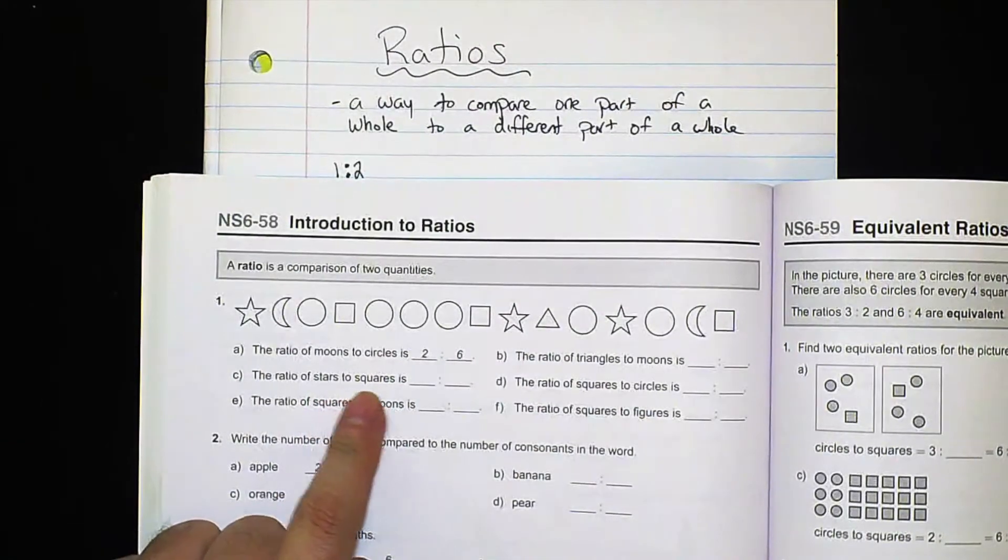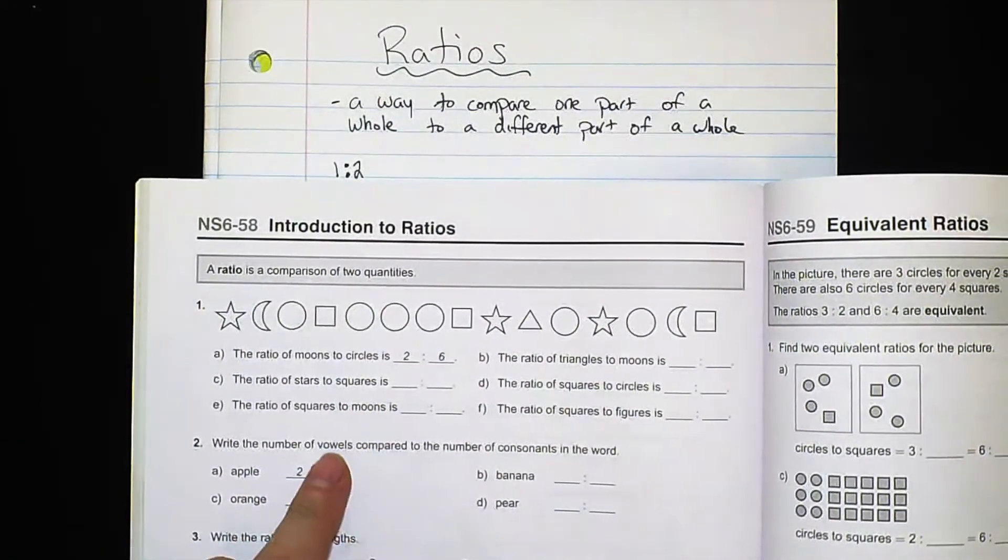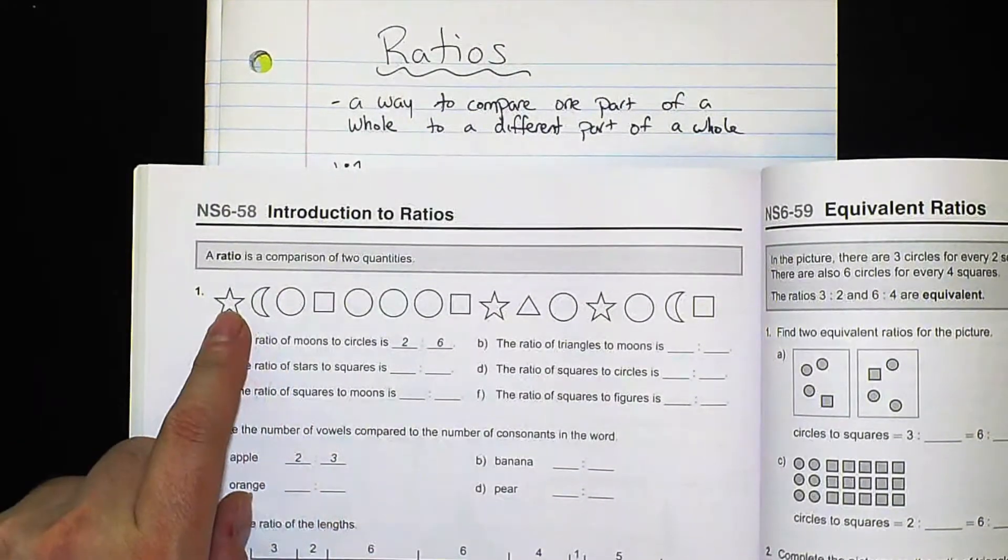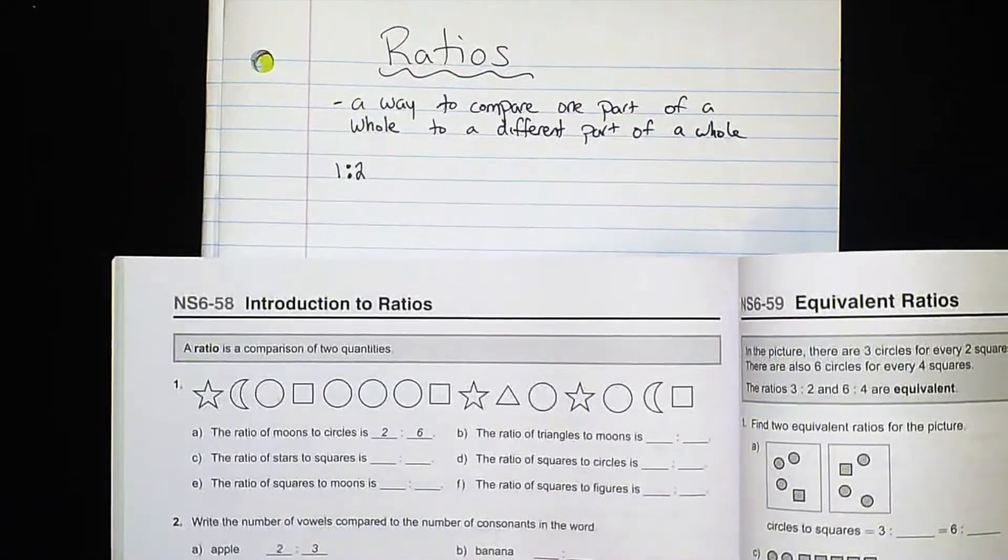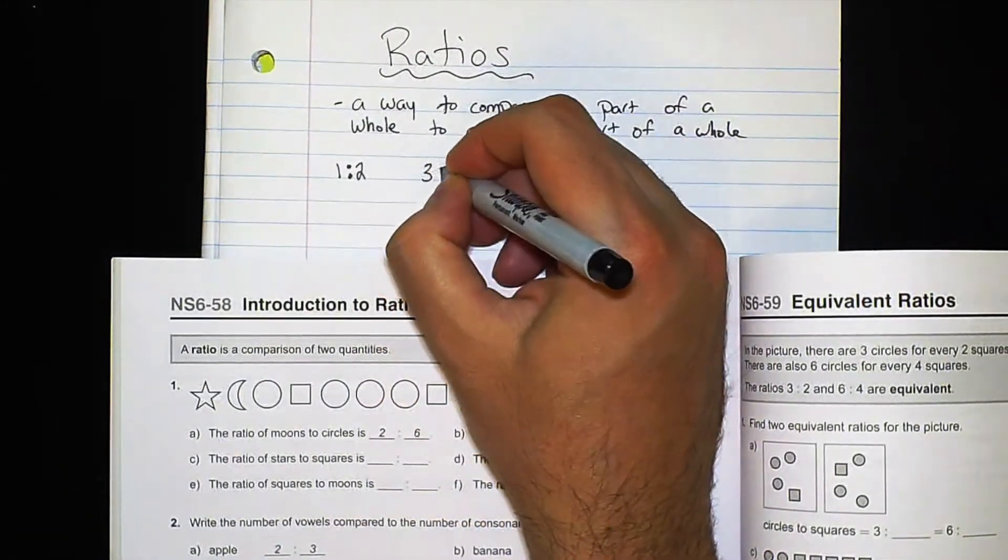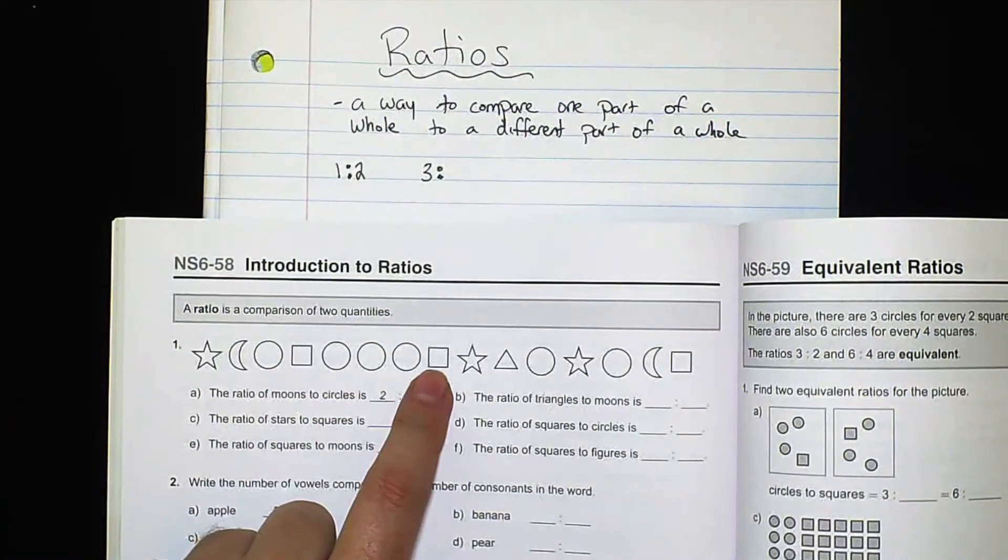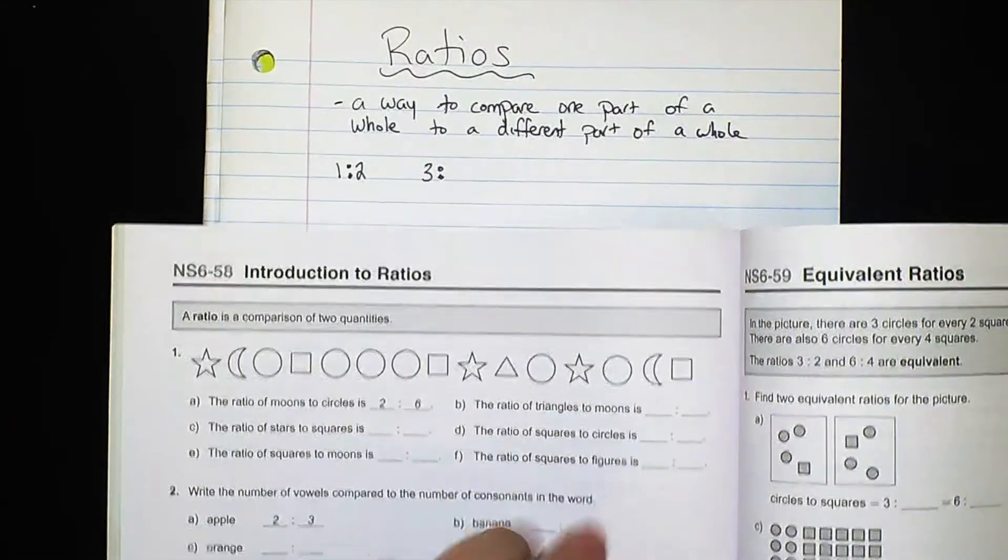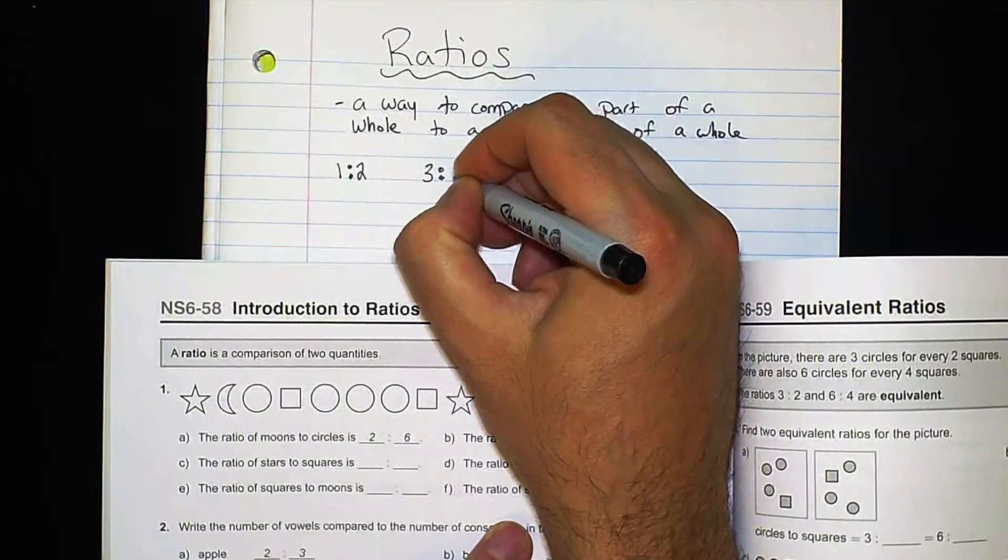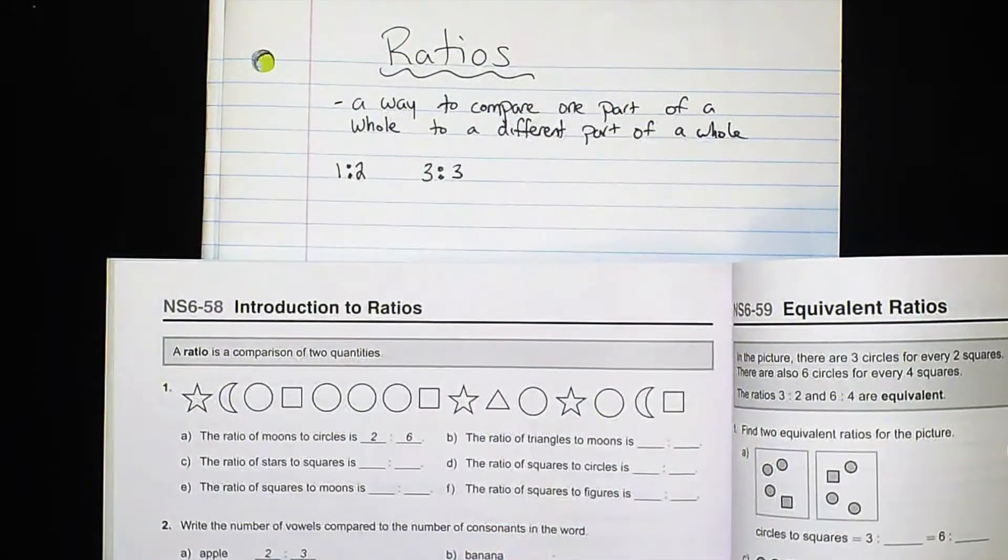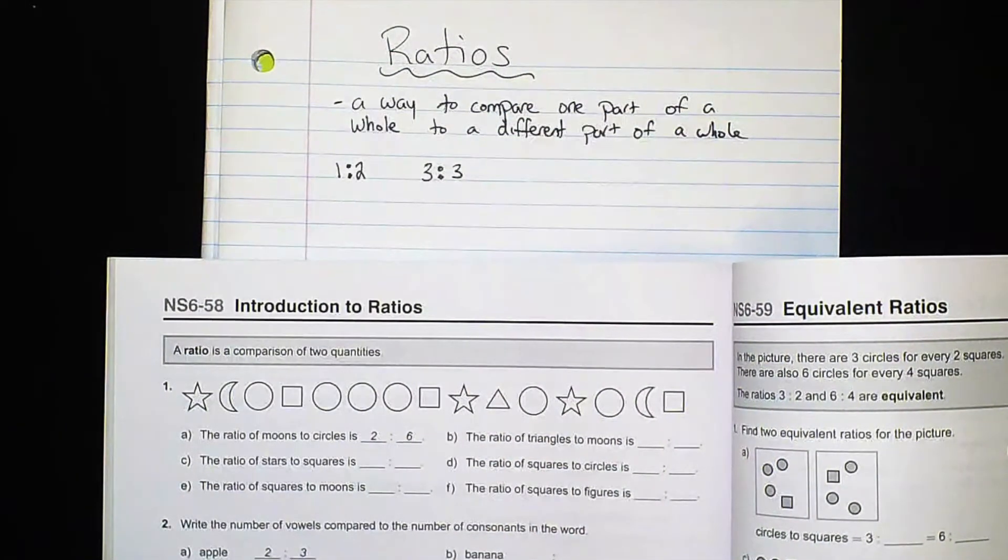We'll do ratio of stars to squares. So stars we see that there's one, two, three. So there are three stars and squares one, two, three. So this ratio we would say is even. There are three stars and three squares that's an even ratio.